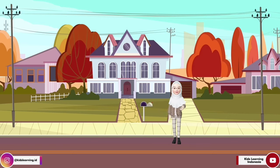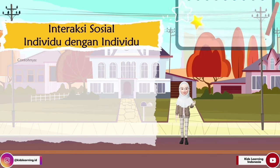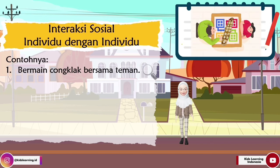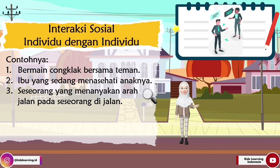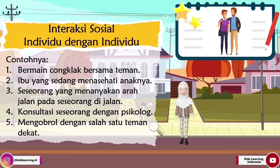Selanjutnya, teman-teman akan mengetahui contoh interaksi sosial individu dengan individu. Contoh yang pertama, bermain congklak bersama teman. Contoh yang kedua, ibu yang sedang menasehati anaknya. Contoh yang ketiga, seseorang yang menanyakan arah jalan pada seseorang di jalan. Contoh yang keempat, konsultasi seseorang dengan psikolog. Dan contoh yang kelima, mengobrol dengan salah satu teman dekat.